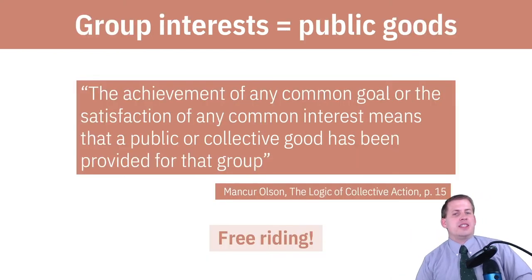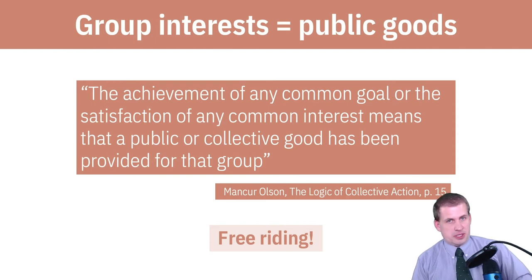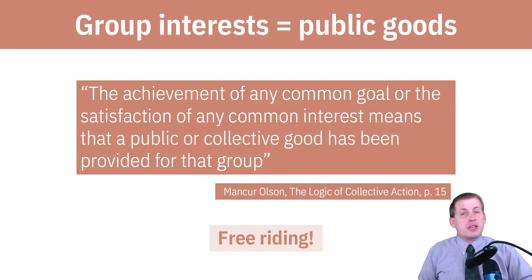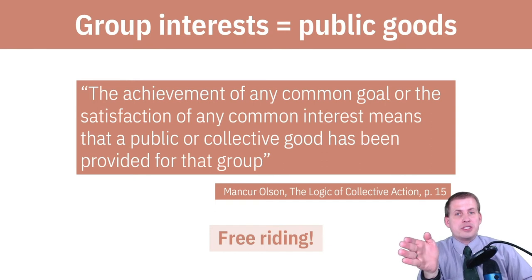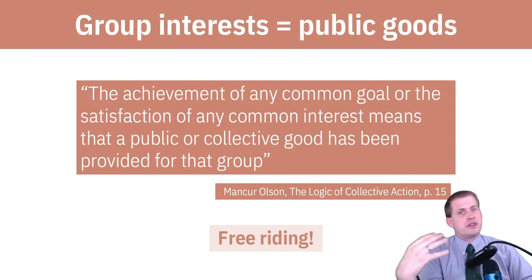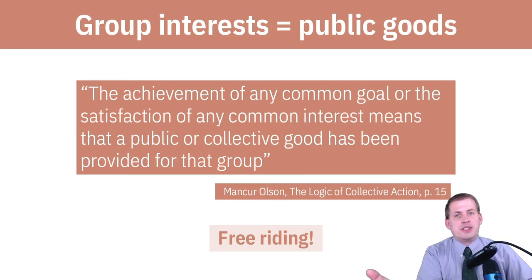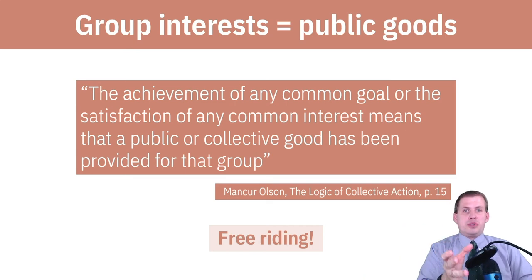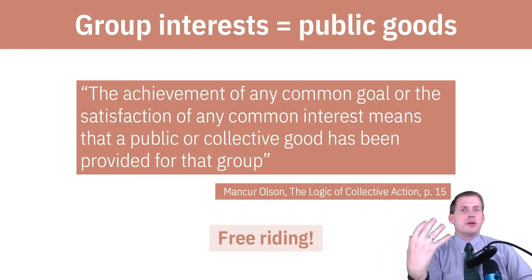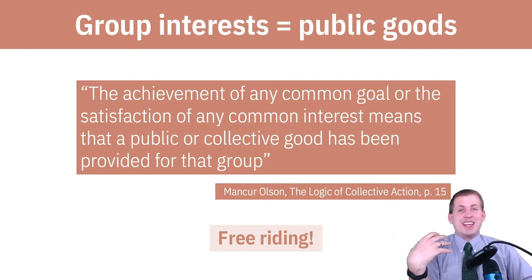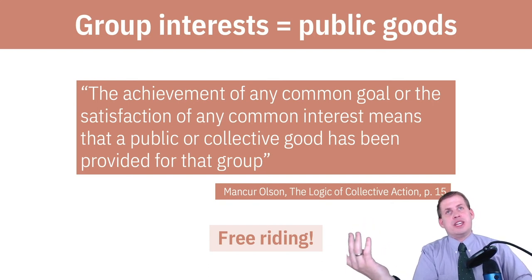We talked about this in the last session with a slide on group interests — group interests are actually a public good situation. If a whole group of people lobbies for a cause they're passionate about, that becomes a public good: it's non-rivalrous (one person joining a cause like lobbying for peanut butter legislation doesn't prevent others from joining), and it's non-excludable (you can't stop people from benefiting from whatever law gets passed). The 'peanut butter grandma' from the podcast had to deal with getting people to support her movement for better peanut butter labeling standards, but it was hard to get people on board because if she succeeded, everybody in the country would benefit anyway.